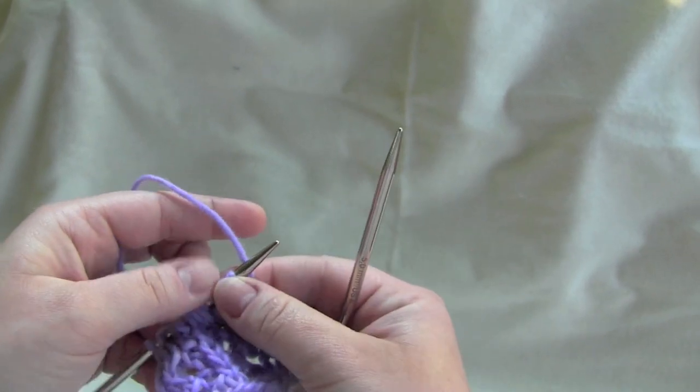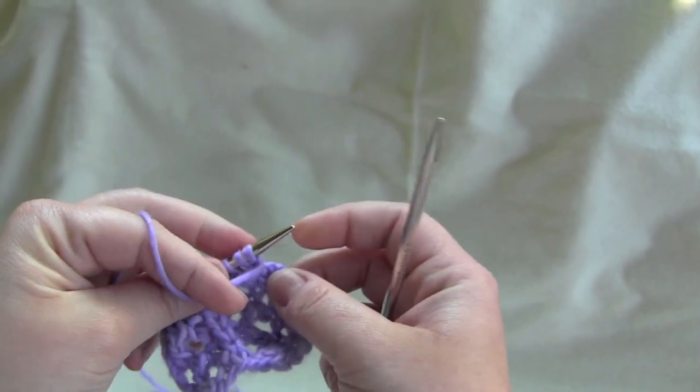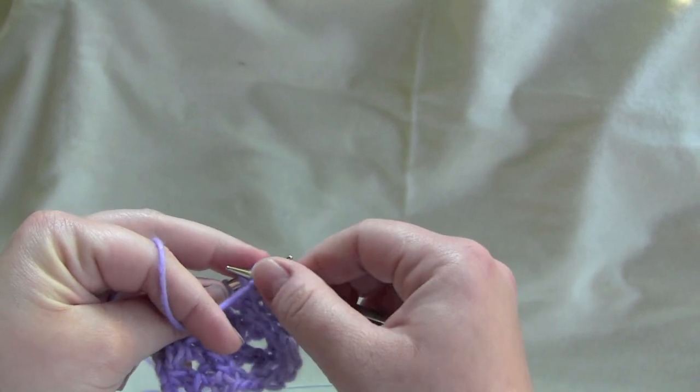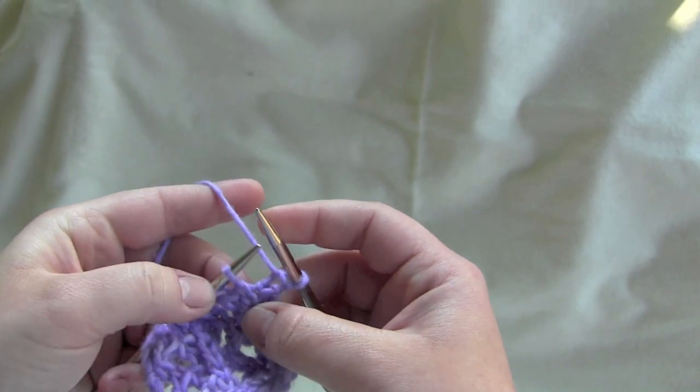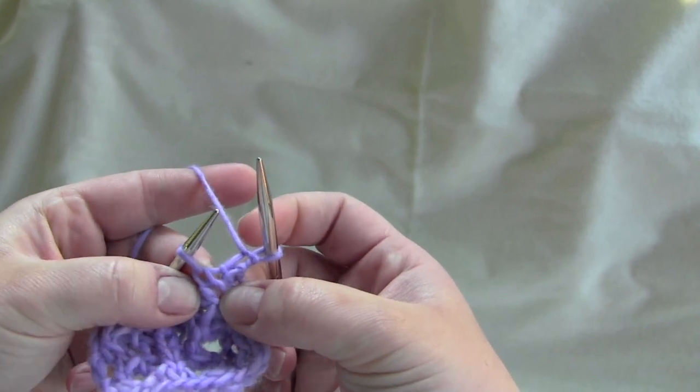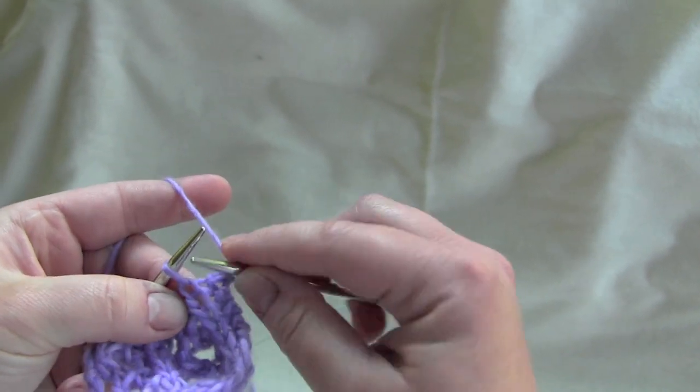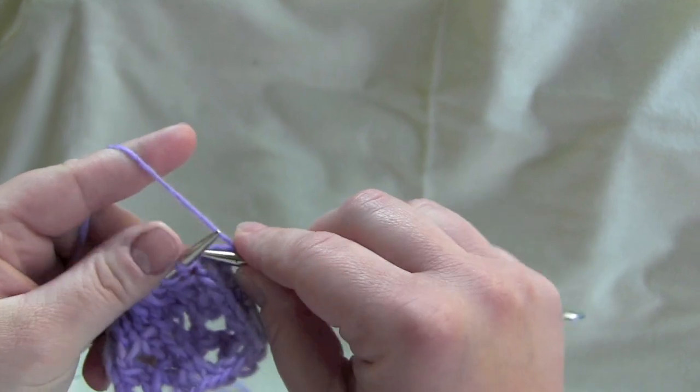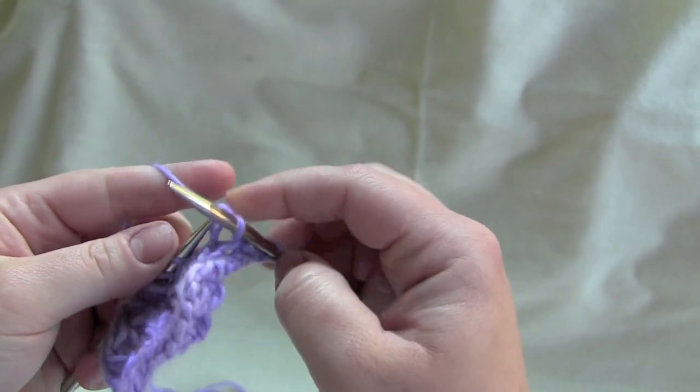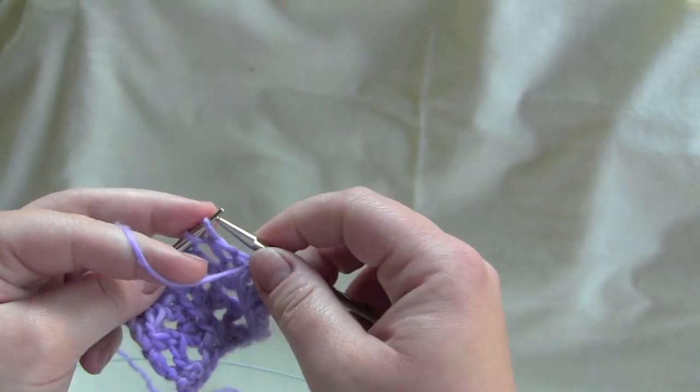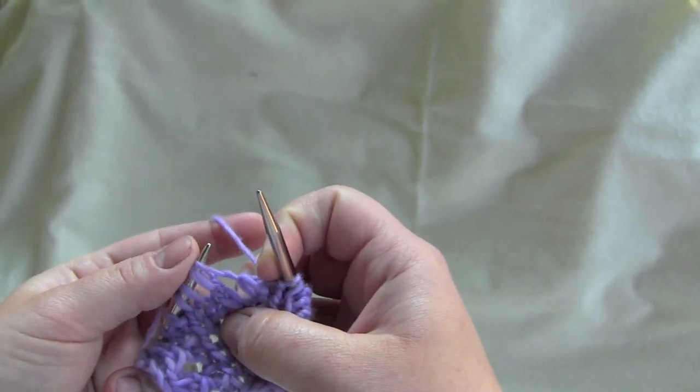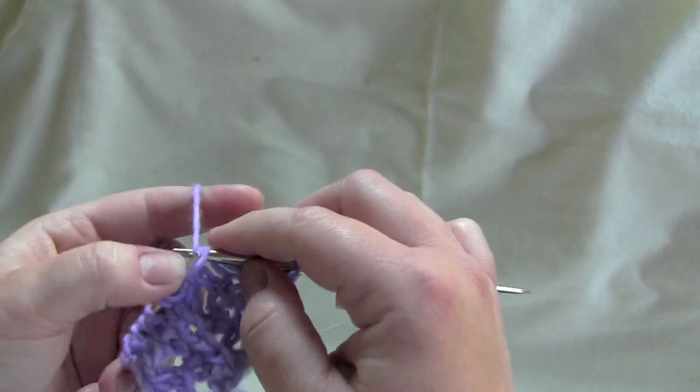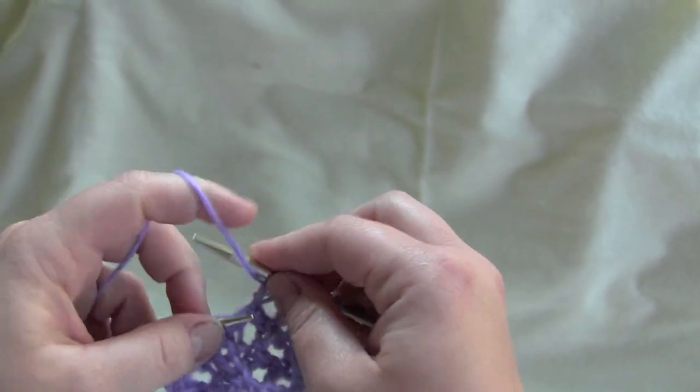For row three, again you start by purling your first stitch, and we're going to knit into the stitch below again, purl one, knit two together, and yarn over.